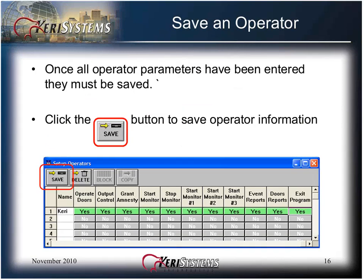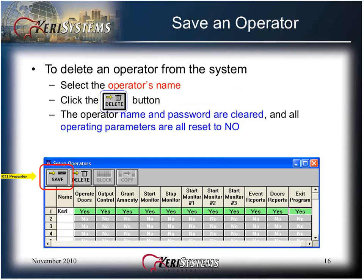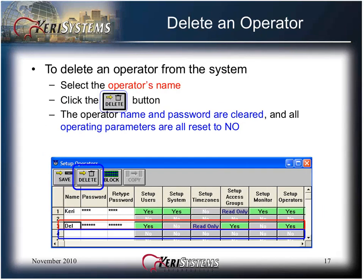Once all the operator parameters have been entered, they must be saved. If they are not saved and the Setup Operator window is closed, all entries are lost and must be re-entered. Click the Save button to save operator information. To delete an operator from the system, select the operator's name and click the Delete button. The operator name and password are cleared and all operating parameters are reset to No.